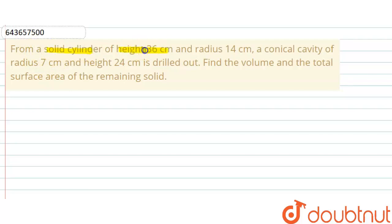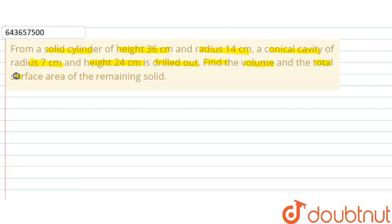Hello everyone. The question is: from a solid cylinder of height 36 centimeter and radius 14 centimeter, a conical cavity of radius 7 centimeter and height 24 centimeter is drilled out. Find the volume and the total surface area of the remaining solid.